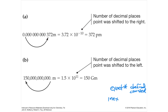Inexact numbers are anything that is measured. So when you measure something, your measurement is limited by how good your measuring device is. For that reason, you have to spend a lot of effort making sure that you don't mess up an answer simply by being sloppy in how you present that answer. So the first thing we're going to review is scientific notation.